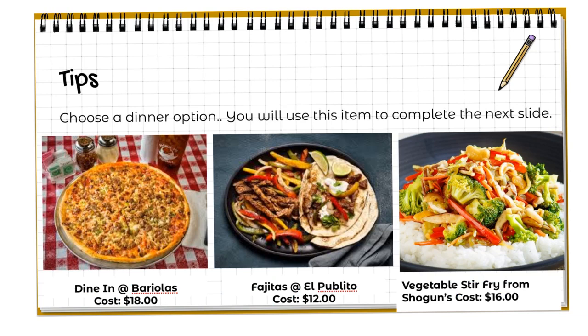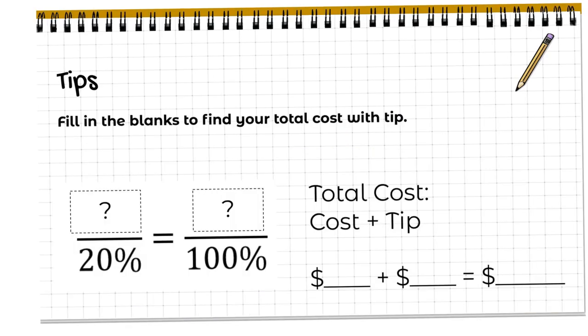On this slide, you get to choose where you're going to eat dinner. Are you going to eat at Barreolas, El Pablito, or Shogun's? We'll say it's takeout since we're social distancing. And I did not forget my vegetarian option — you can have vegetable stir fry. You are going to plug these numbers in by typing them into each blank. The 100% is the cost of your meal, and you're going to find how much your tip should be, then add the total together for how much you should be paying.